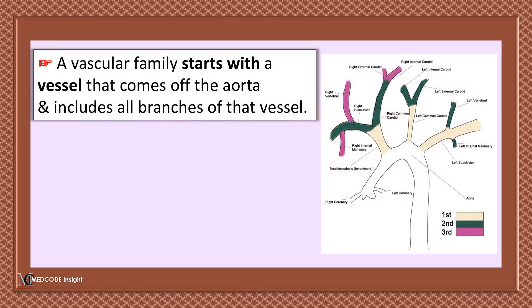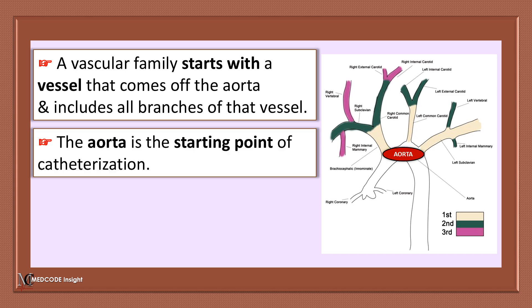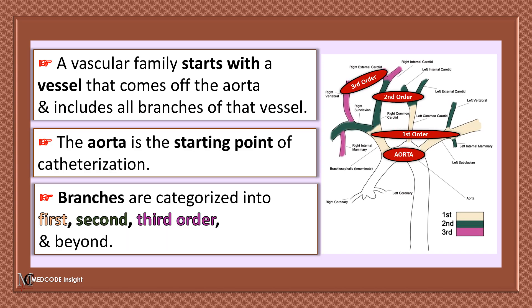A vascular family starts with a vessel that comes off the aorta and includes all branches of that vessel. The aorta is the starting point of catheterization. Branches are categorized into first, second, third order and beyond.